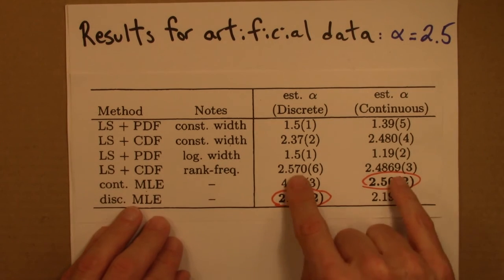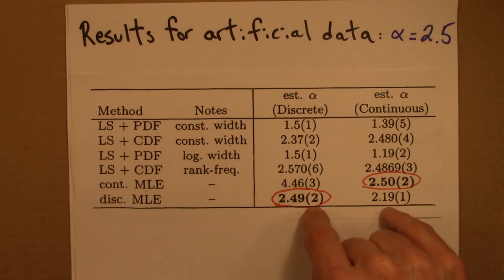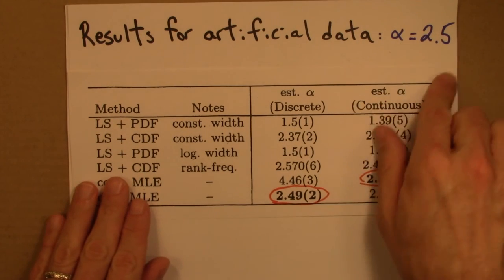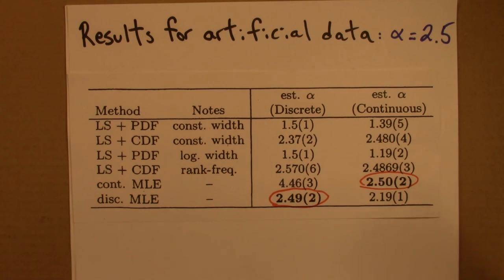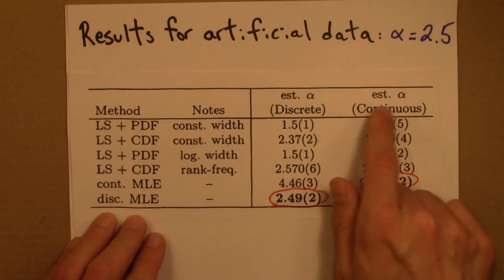Oh, and I guess also the one other take home is that there are different formulas, different approaches for discrete and continuous, and you don't want to mix the two up. This is a case where that detail matters. So, if you have some data, you want to fit it to a power law, use the MLE estimators. There's code online to do it, and be careful to not interchange discrete and continuous.